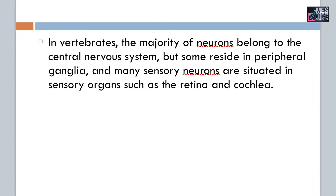In vertebrates, the majority of neurons belong to the central nervous system, but some reside in the peripheral ganglia and many sensory neurons are situated in sense organs such as the retina, cochlea, etc.